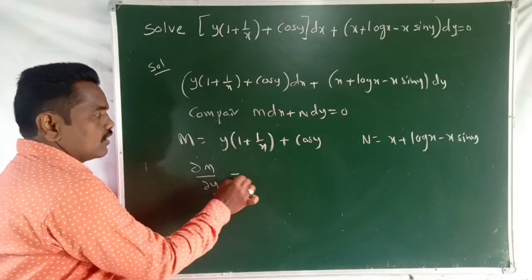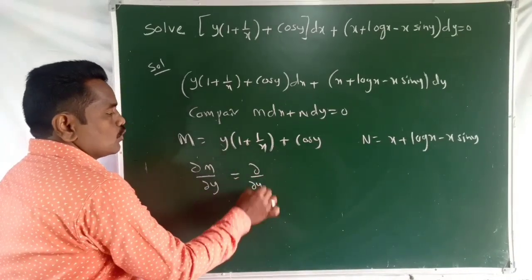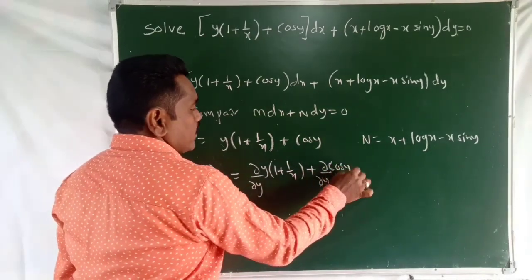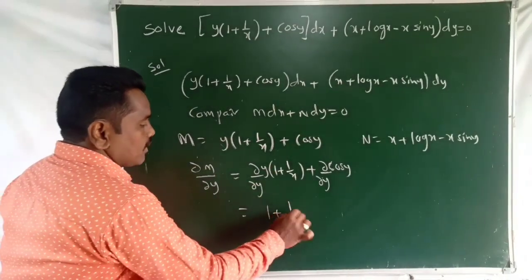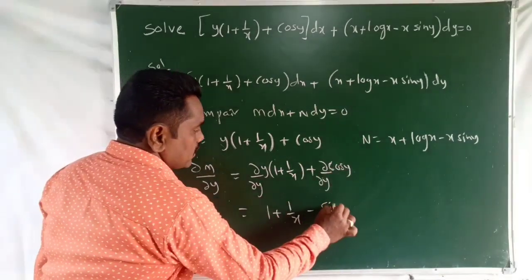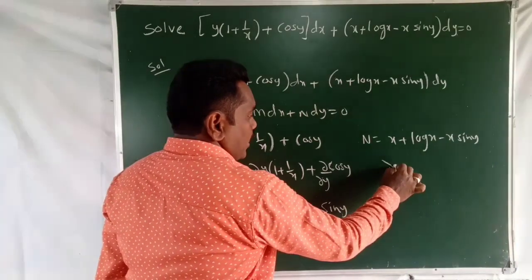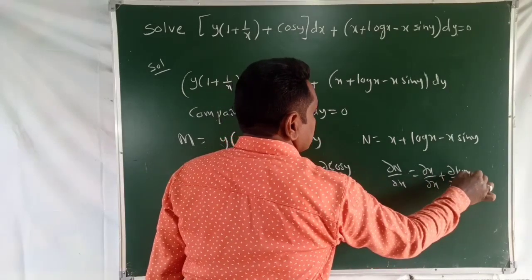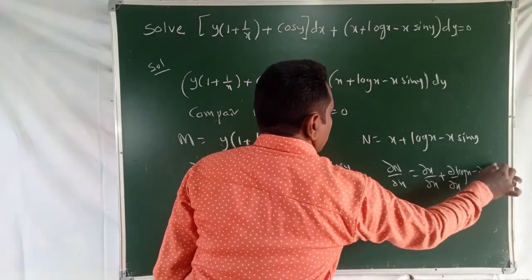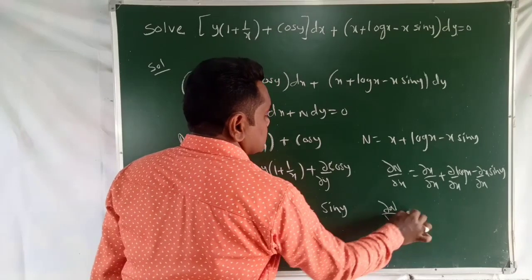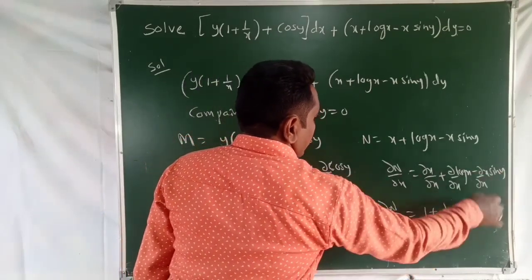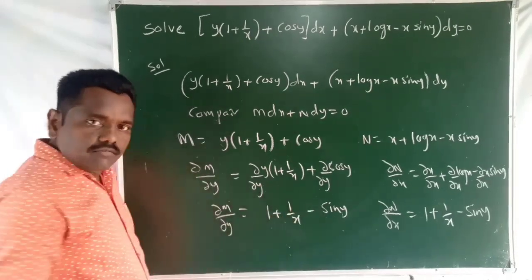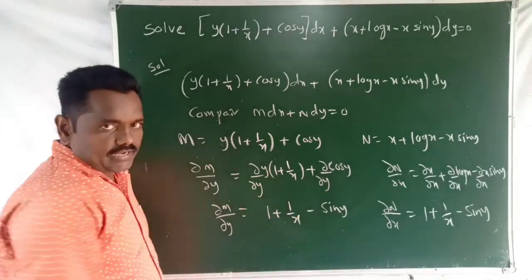Now we compute ∂M/∂Y. There are two terms: differentiating Y(1 + 1/X) with respect to Y gives (1 + 1/X), and differentiating cos Y gives −sin Y. So ∂M/∂Y = 1 + 1/X − sin Y. For ∂N/∂X, differentiating X log X gives 1 + log X... wait — differentiating gives 1 + 1/X, and differentiating −X sin Y gives −sin Y. So ∂N/∂X = 1 + 1/X − sin Y.